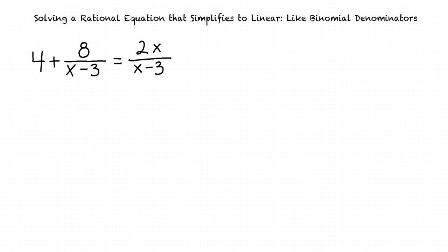This equation involves several rational expressions. A rational expression is a type of fraction that involves polynomials in the numerator or denominator. For example, the fraction 8 over the quantity x minus 3 has a polynomial x minus 3 in the denominator, so it is a rational expression. Also, the expression 2x over the quantity x minus 3 is a rational expression.